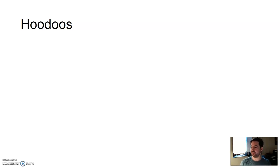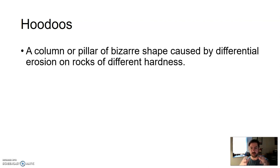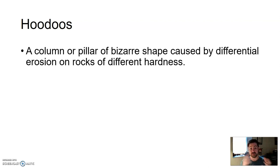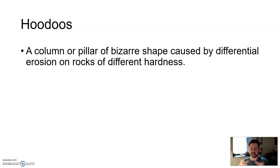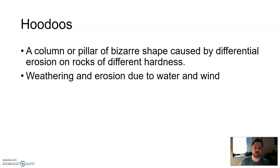Hoodoos! Maybe one of my favorites — just a fun word. A hoodoo is like a little column or pillar of some bizarre shape caused by differential erosion on rocks of different hardnesses. Different rocks have different properties; some weather and erode faster, some slower. Because of that, you get a differential rate of erosion, so you can get different sizes in these pillars — sometimes looking like a big rock balanced on top of a small one. These little pillars are called hoodoos.